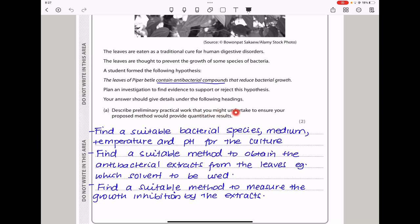Your answer should give details under the following headings. Describe preliminary practical work that you would undertake to ensure your proposed method will provide quantitative results. In planning this experiment, we need to find out about the conditions that we're going to use. We need to find out about the method of extraction of the antimicrobial agents, and we need to find out about the suitable method to measure the dependent variable. So I said find a suitable bacterial species, find the suitable medium, the temperature as well as pH for the culture. Then find a suitable method to obtain the antimicrobial extract from the leaves. For example, we need to find which solvent, what mass are we going to use. And then find a suitable method to measure the growth inhibition by the extract. For example, it could be measuring the diameter of the zone of inhibition.